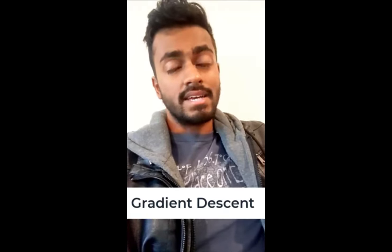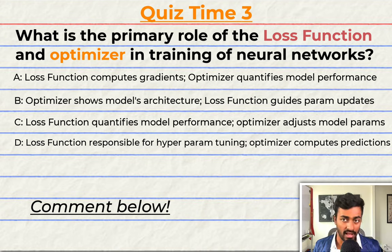Quiz time! What are the primary roles of the loss function and optimizer in the training of neural networks? A: The loss function computes gradients while the optimizer quantifies the model's performance. B: The optimizer determines the model's architecture while the loss function guides parameter updates. C: The loss function quantifies the model's performance while the optimizer adjusts the model parameters during training. D: The loss function is responsible for hyperparameter tuning while the optimizer computes model predictions. Comment your answer down below and let's have a discussion.